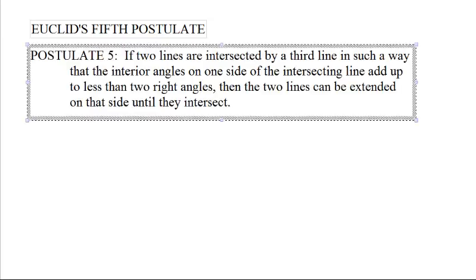And now for Euclid's fifth postulate. Postulate five: If two lines are intersected by a third line in such a way that the interior angles on one side of the intersecting line add up to less than two right angles, then the two lines can be extended on that side until they intersect.